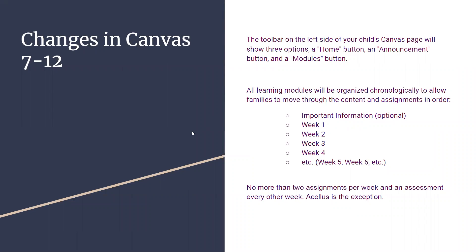You are going to see similar changes in Canvas 7-12 — the same Home button, Announcements button, and Modules, with the same chronological organization. Secondary 7-12 students are generally doing two assignments per week and an assessment every other week. Acellus is different — it's an ongoing rolling curriculum, and since each course is divided into a separate content area, you won't see a weekly at-a-glance the same way.